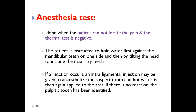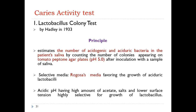The anesthesia test is performed when the patient cannot locate the pain and the thermal test is negative. The patient holds water against the mandibular teeth, then tilts the head to include maxillary teeth. If a reaction occurs, an intraligamental injection is given to anesthetize the suspect tooth, and hot water is applied again; if there is no reaction, the pulpitic tooth has been identified.